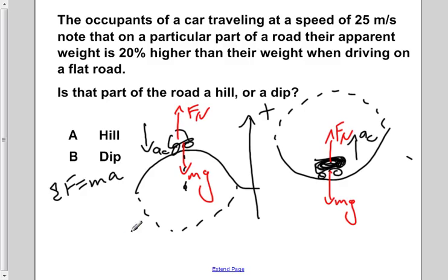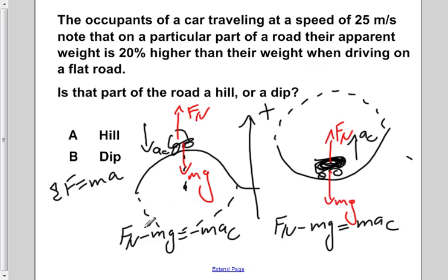If we now apply that to all these situations, we would have the normal force minus mg equals negative ma centripetal. When we're at the bottom of our loop, we would have FN minus mg equals ma centripetal.